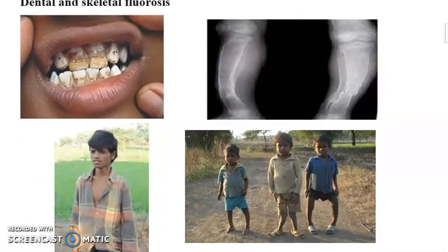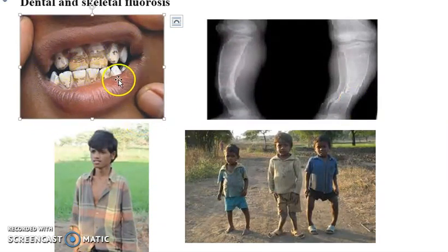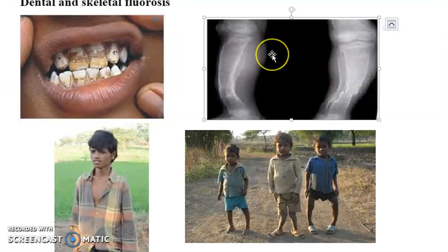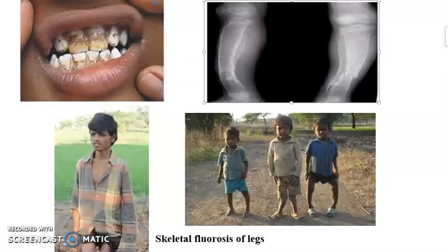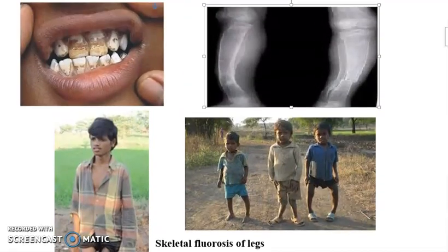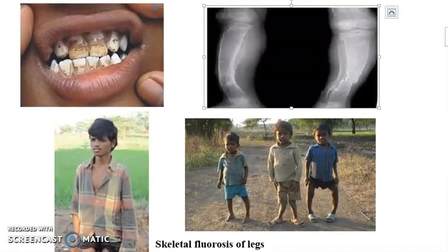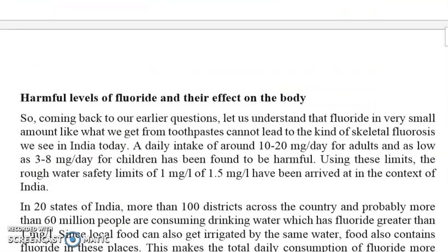These are some photographs collected from the internet showing dental and skeletal fluorosis. One picture shows dental fluorosis, the second picture is an X-ray film of skeletal fluorosis, and the next two photographs show children having skeletal fluorosis of the legs. You can find many photographs and interesting information about fluorosis through a Google search.